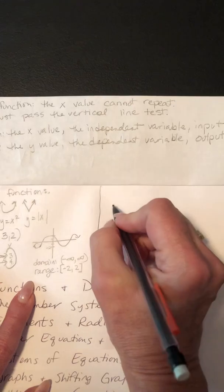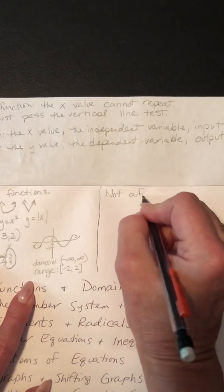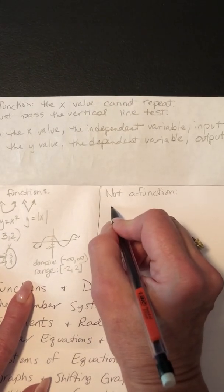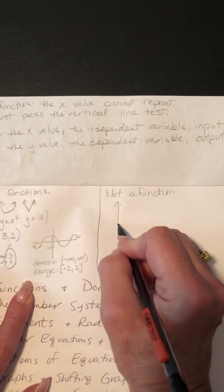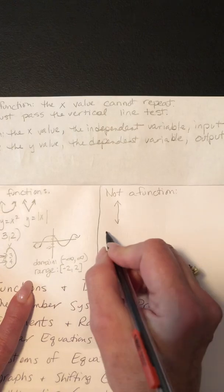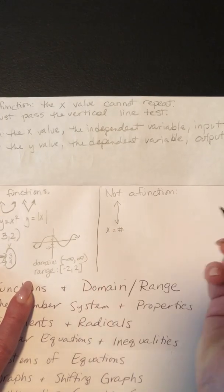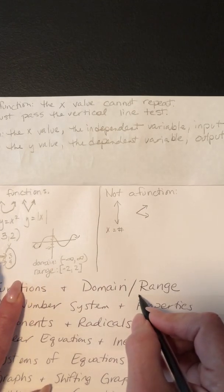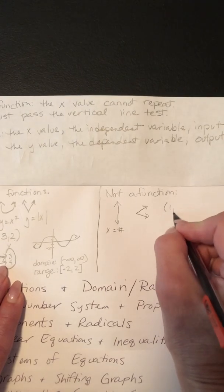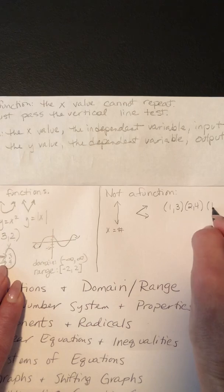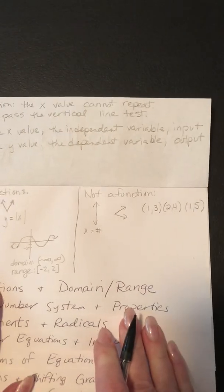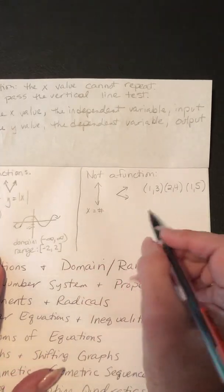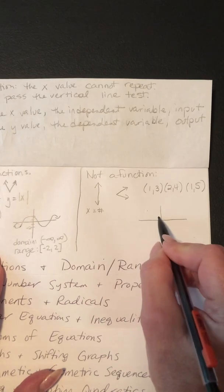Now let's do some examples of what are not functions. In a function the X can't repeat, so let's make ones where the X values do repeat. A vertical line — x equals a number — is not a function because the X repeats over and over. If you had ordered pairs like (1, 3), (2, 4), and then (1, 5), that's not a function because the 1 is repeating.